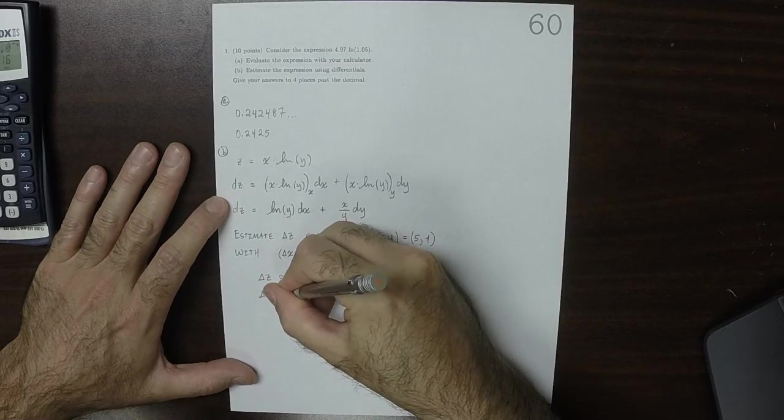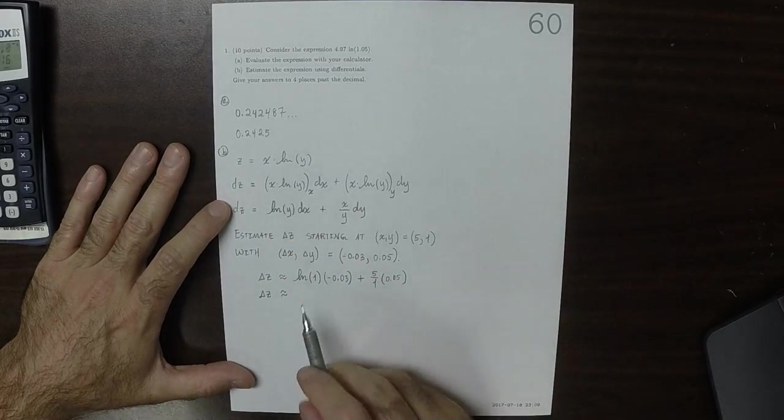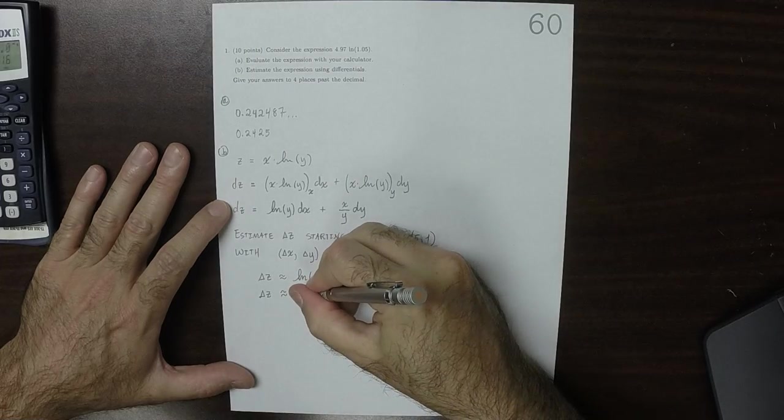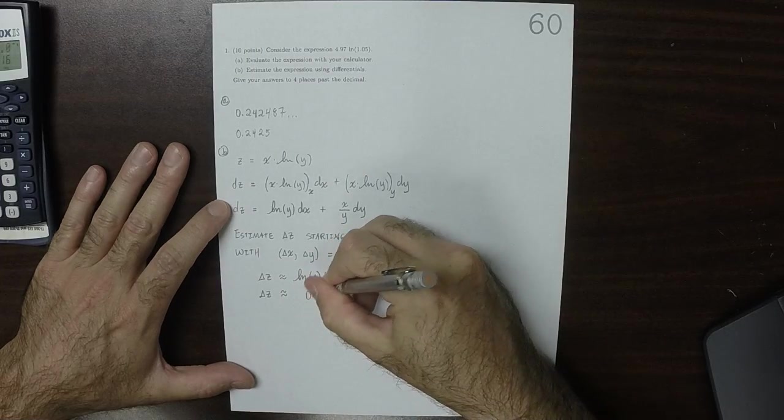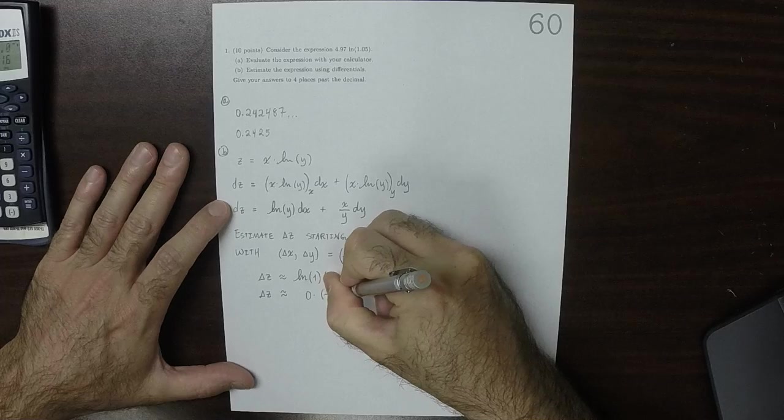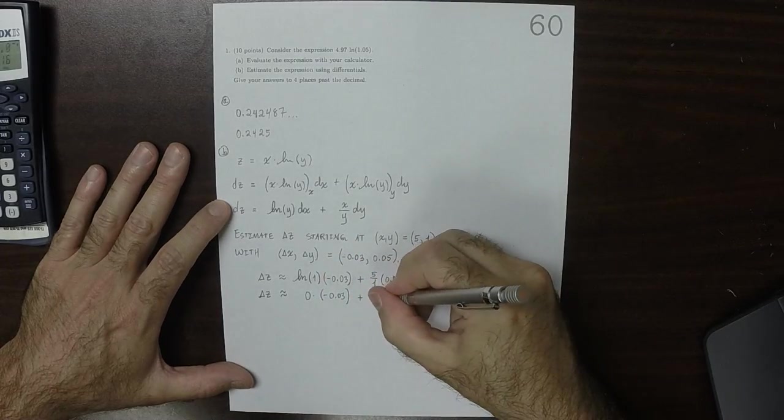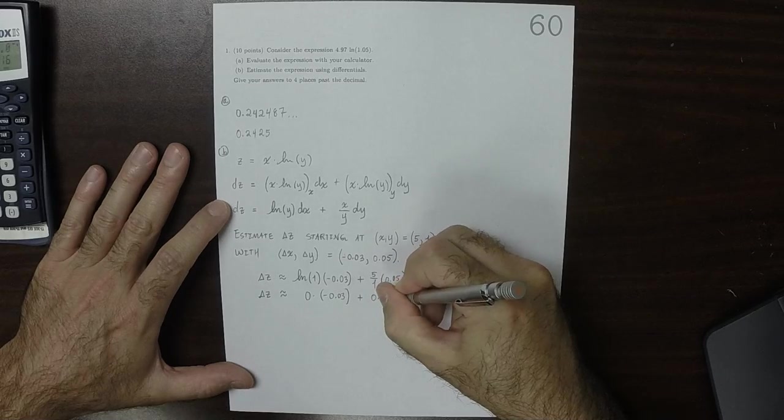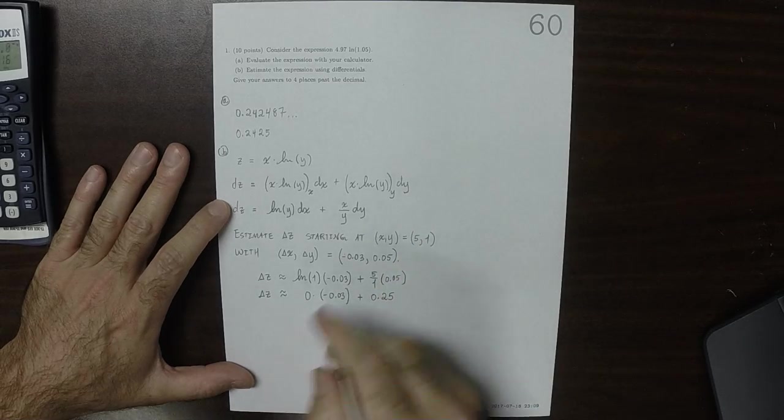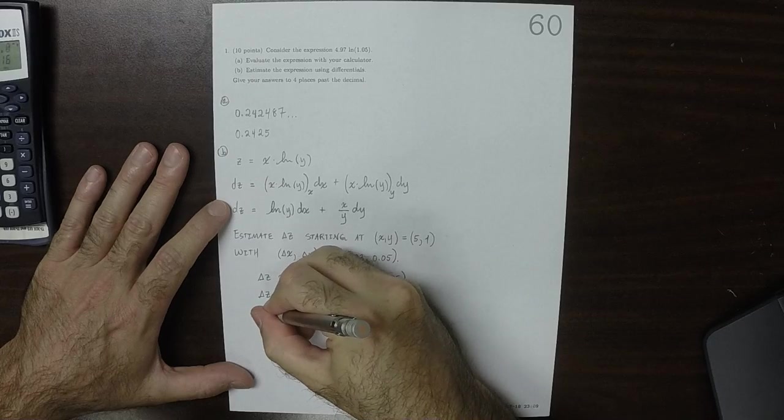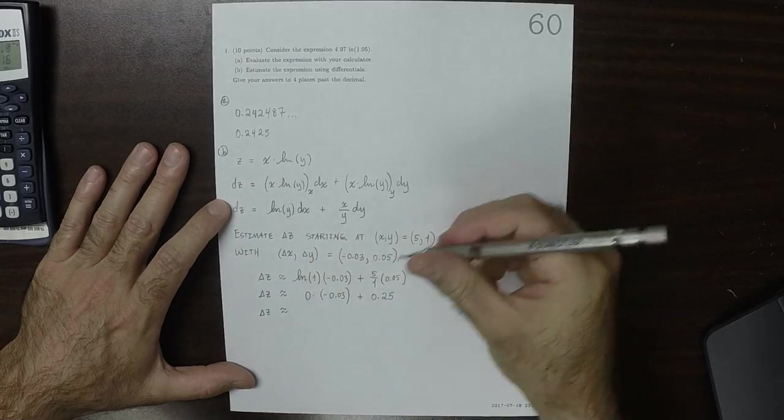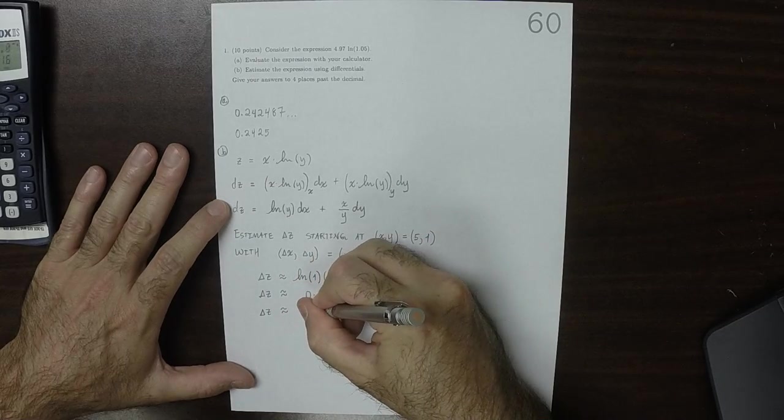So delta z is, well, that's the log of 1 is 0, so multiplied by negative 0.03, plus 5 times that is 0.25. So delta z, according to this, is approximately 0.25.